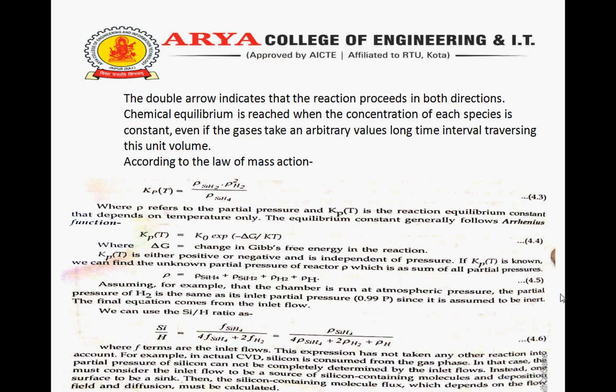Kp(T) is equal to K0 · exp(−ΔG / KT), where ΔG is the change in Gibbs free energy in the reaction. Kp(T) can be either positive or negative and it is independent of pressure.